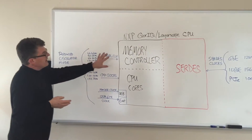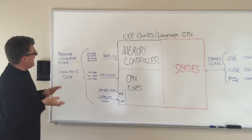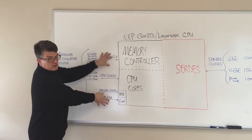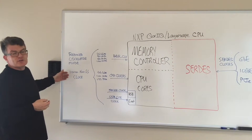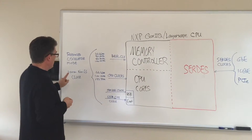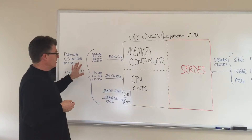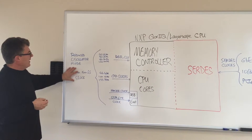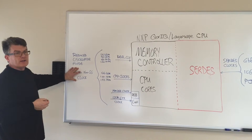In the Layerscape series of CPUs, which are based on the ARM core, Freescale has put in what they call a reduced oscillator mode where all the clocks are basically driven by a single differential 100 MHz non-spreading clock. This saves you from having to figure out how to generate all these clocks. However, it has to be non-spread because the USB clock is also derived from it, so if you're planning to use spread spectrum, you really can't use this mode. Currently, it's only available in the Layerscape devices and not the legacy Core IQ devices.